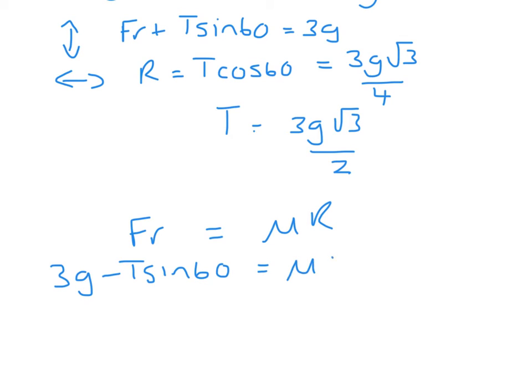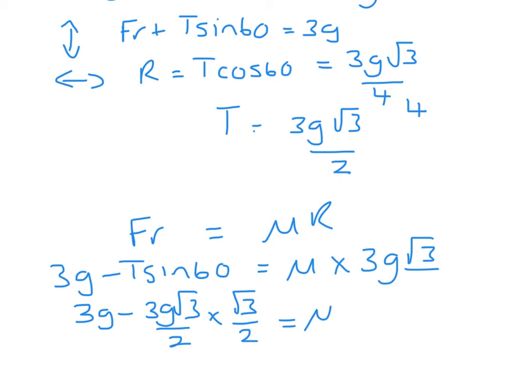We have mu and we have R, 3g root 3 over 4. This gives us 3g minus 3g root 3 over 2 multiplied by root 3 over 2 equals mu 3g root 3 over 4.